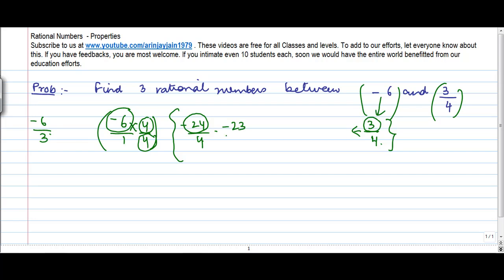So I get minus 23 by 4, minus 21 by 4, and so on, say 1 by 4, 2 by 4. All these numbers will fall between these two rational numbers.